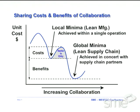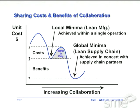There is a local minimum you can achieve through lean manufacturing within your own operations, but there's a barrier to entry — you've got to push through the investment of time and energy in working with key suppliers. If you do that, you can achieve more of a global minimum in terms of unit cost by creating a lean supply chain and increasing collaboration.